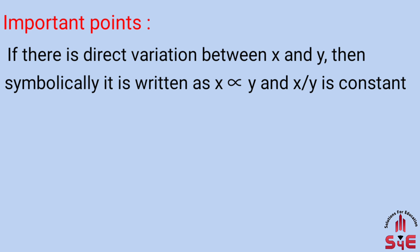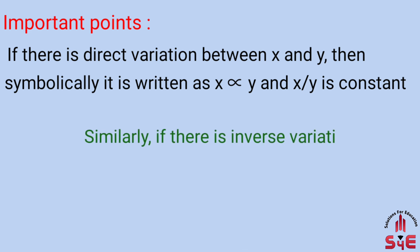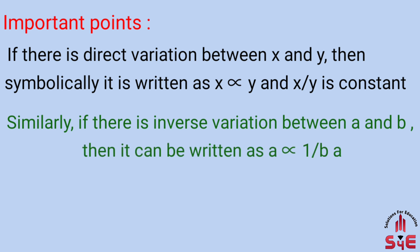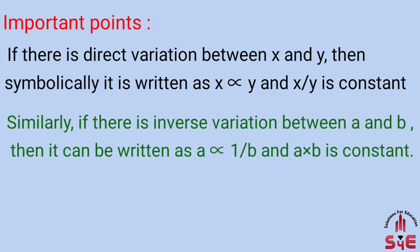Direct variation mein x and y directly proportional honge, aur x upon y ka ratio constant hoga. Similarly, if there is inverse variation between a and b, then it is written as a varies 1 upon b, and a into b is constant. Inverse variation mein a and b inversely proportional honge, aur a aur b ka product hamesha constant hoga.